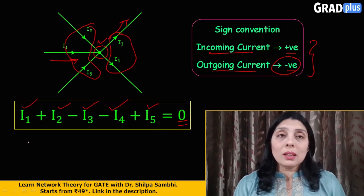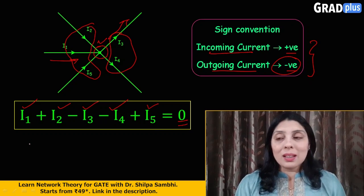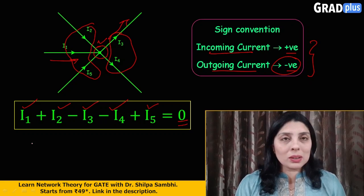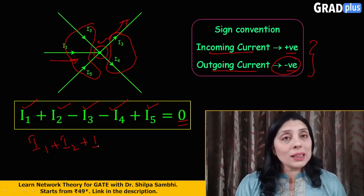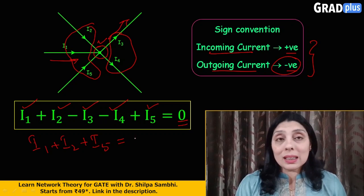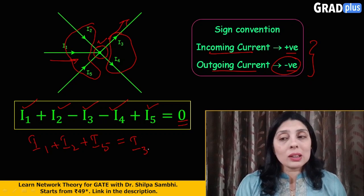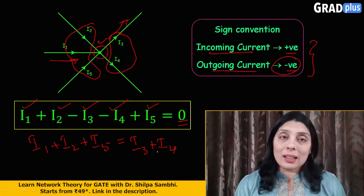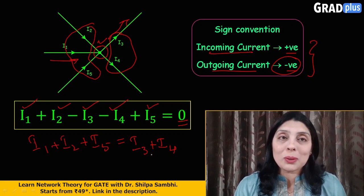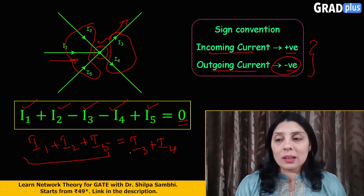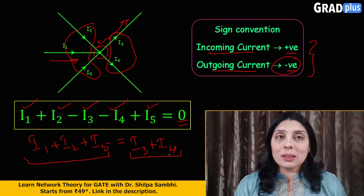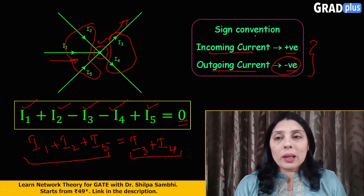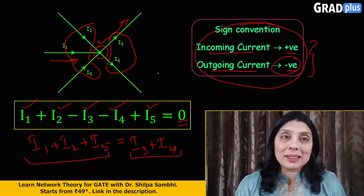The total incoming current has to be equal to the total outgoing current. So if I rewrite this equation what I'll get: I1 + I2 + I5, this is the summation of incoming current and this is equal to I3 + I4 and this is the summation of the outgoing current. So the summation of incoming current is equal to the summation of outgoing current. Right, so here we have applied Kirchhoff's current law with this sign convention in assumption.